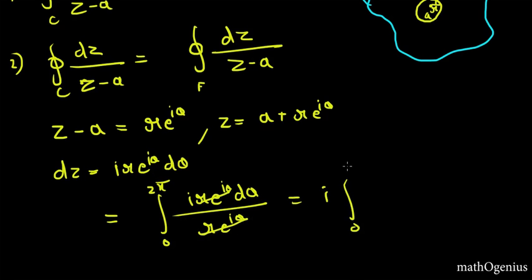And solving this we get theta, and then 2 pi minus 0, which is 2 pi. So we get 2 pi i, and this is our answer.